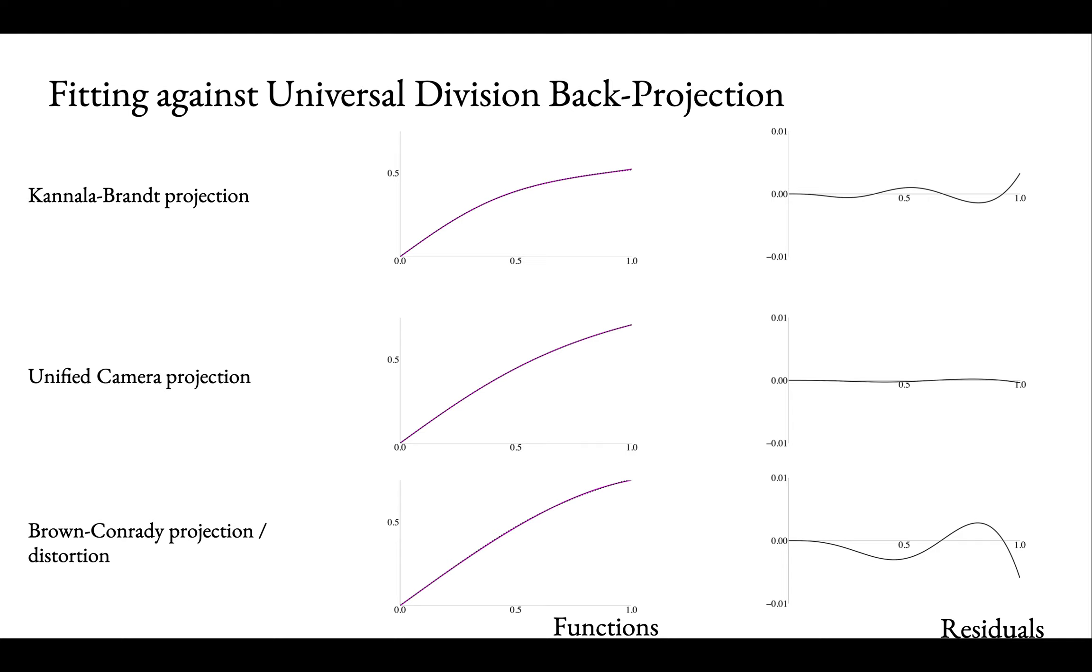Our approach is to decouple the calibration task for central projection models into a simpler parameter estimation for a universal division back projection model followed by a regression task to obtain the parameters of the target camera model. As a result, BabelCalib can accurately and reliably estimate all commonly used projection functions.